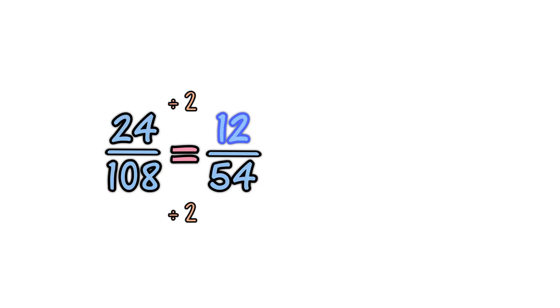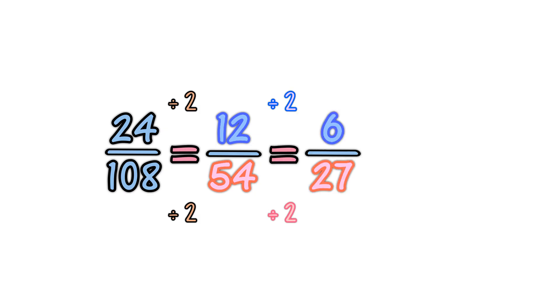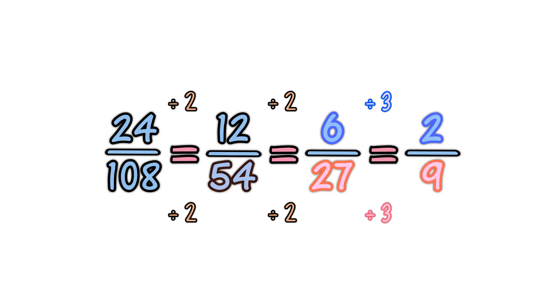Divide the 12 and the 54 again by 2. You get 6 over 27. Now divide by 3, and you get 2 ninths.